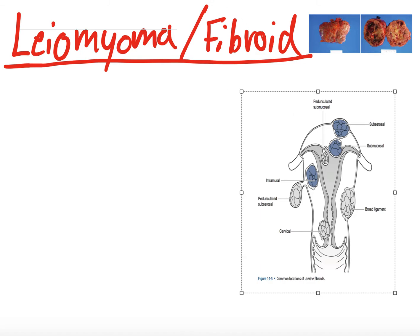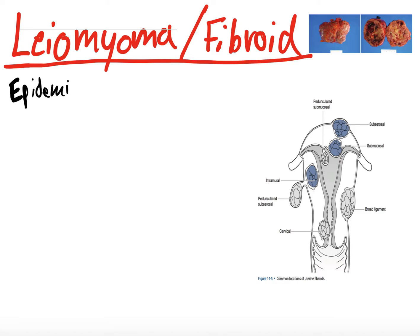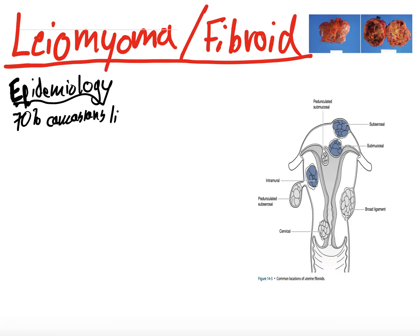So, fibroids. I'll start with epidemiology, as I tend to do. Fibroids are the most common indication for surgery for women in the U.S. — about a third of all hysterectomies are performed for this reason. Lifetime risk in Caucasians is 70%. For African Americans, it's greater than 80% incidence by the age of 50 alone. So African Americans are more prone to get leiomyomas or fibroids, but Caucasians are also very prone to get them as well.